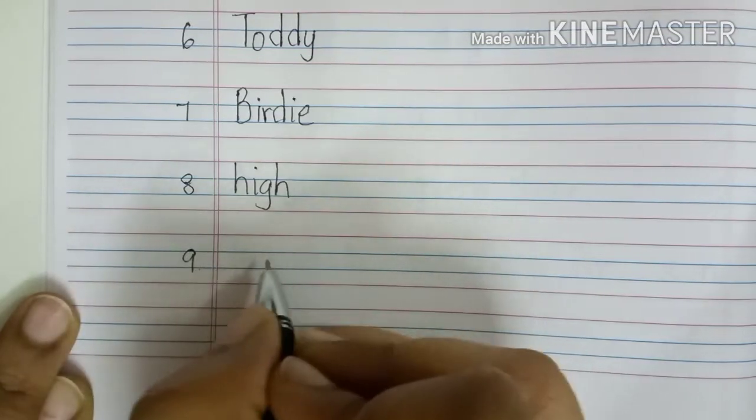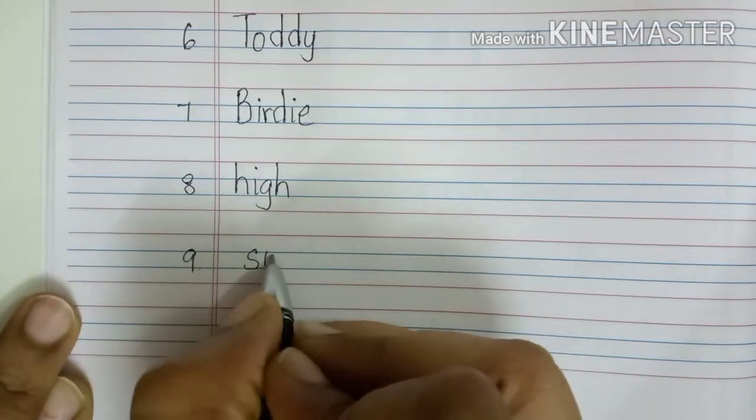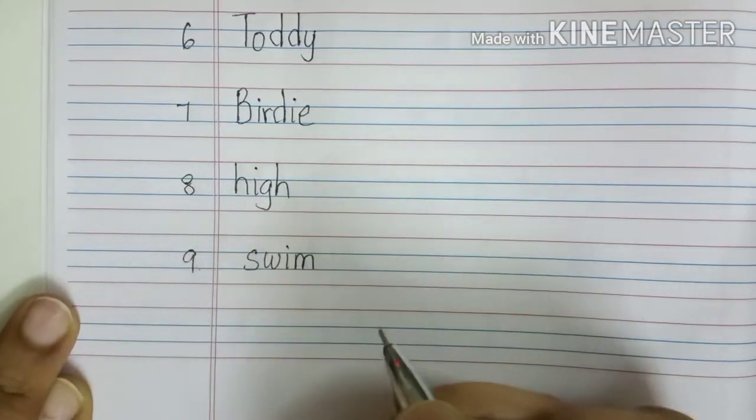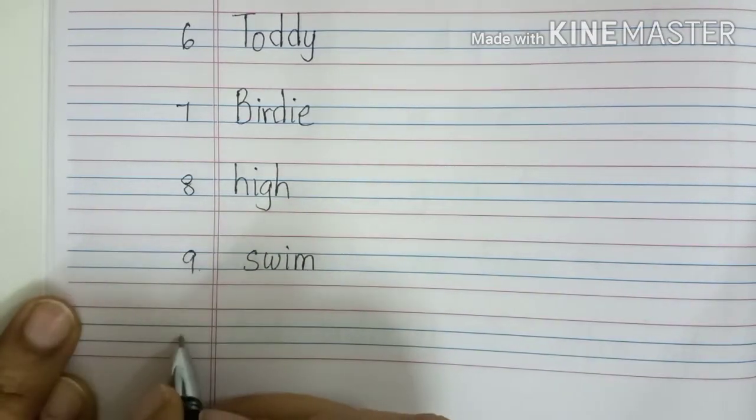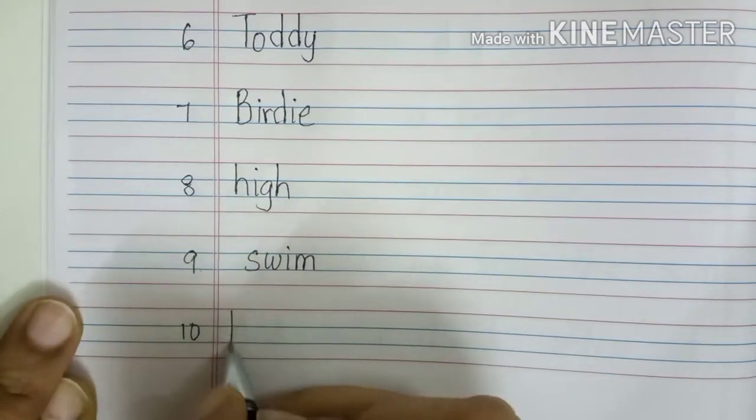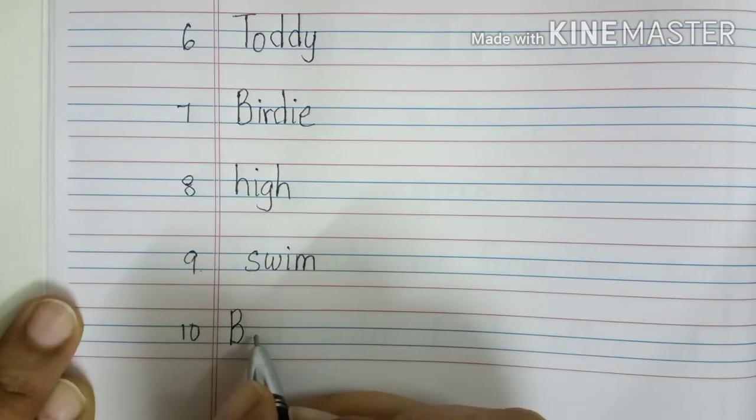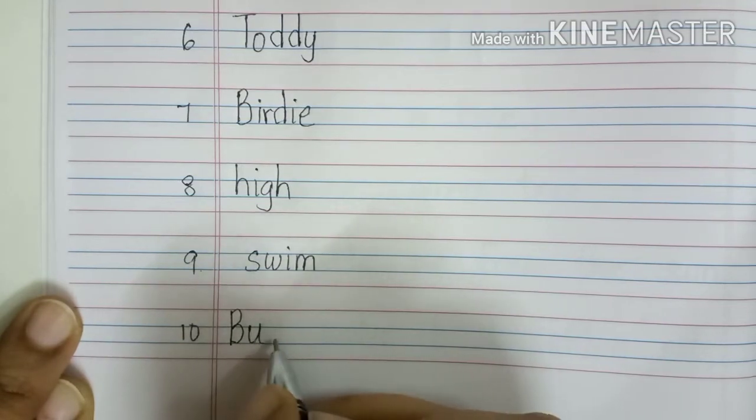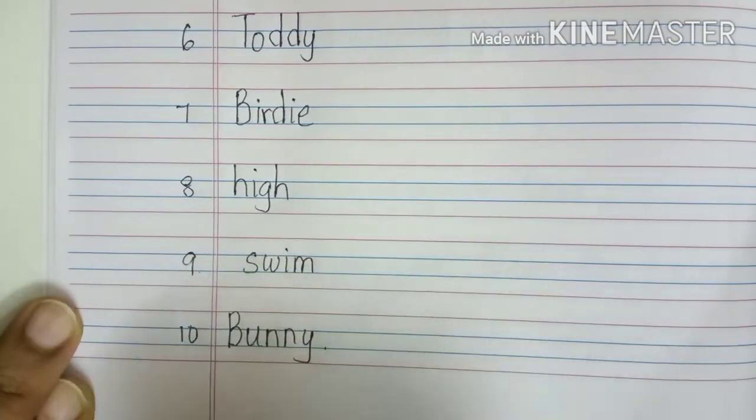Ninth one will be, S-W-I-M, Swim. Tenth one will be, again name of a rabbit, animal. So, it is B-U-N-N-Y, Bunny. We will read the words again.